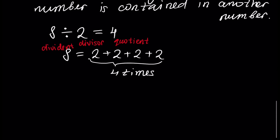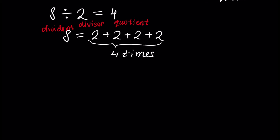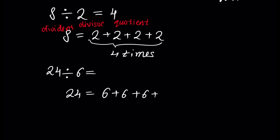Another example is 24 divided by 6. Because 24 can be written as 6 plus 6 plus 6 plus 6 — that gives 12, then 18, then 24. That's why 6 is contained in 24 four times, and the result is 4.